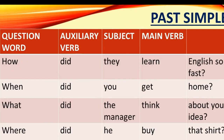The formula also works in the past simple, where the auxiliary verb is 'did'. For example: How did they learn English so fast? When did you get home? What did the manager think about your idea? Where did he buy that shirt?